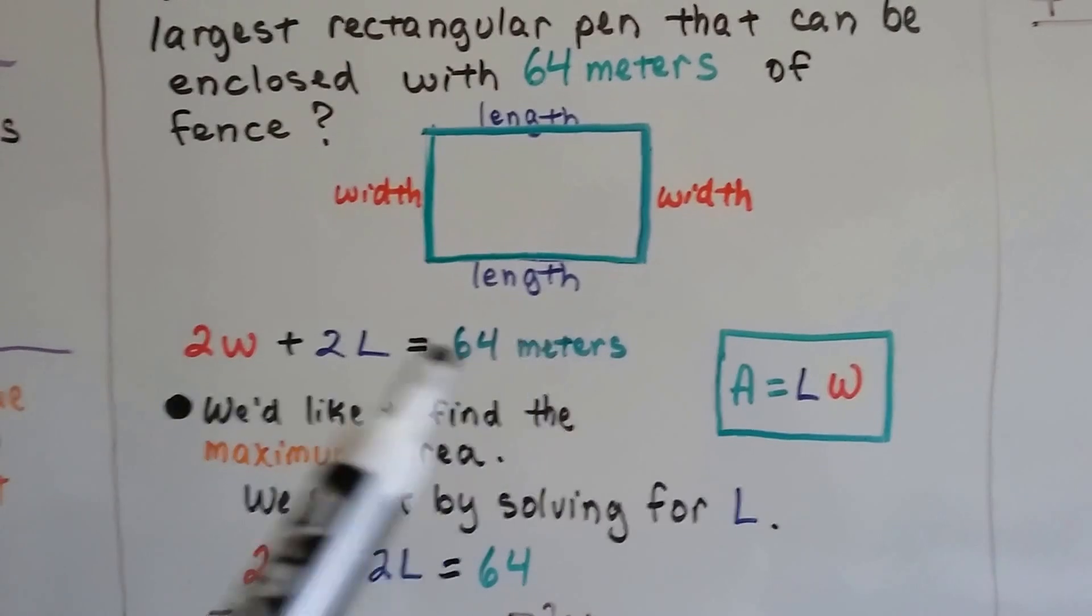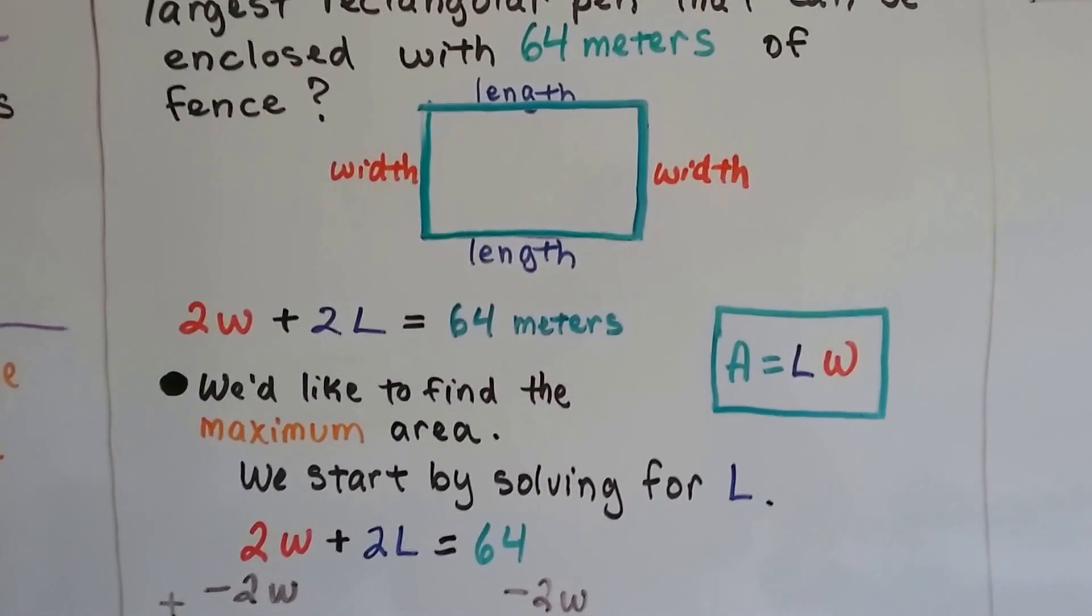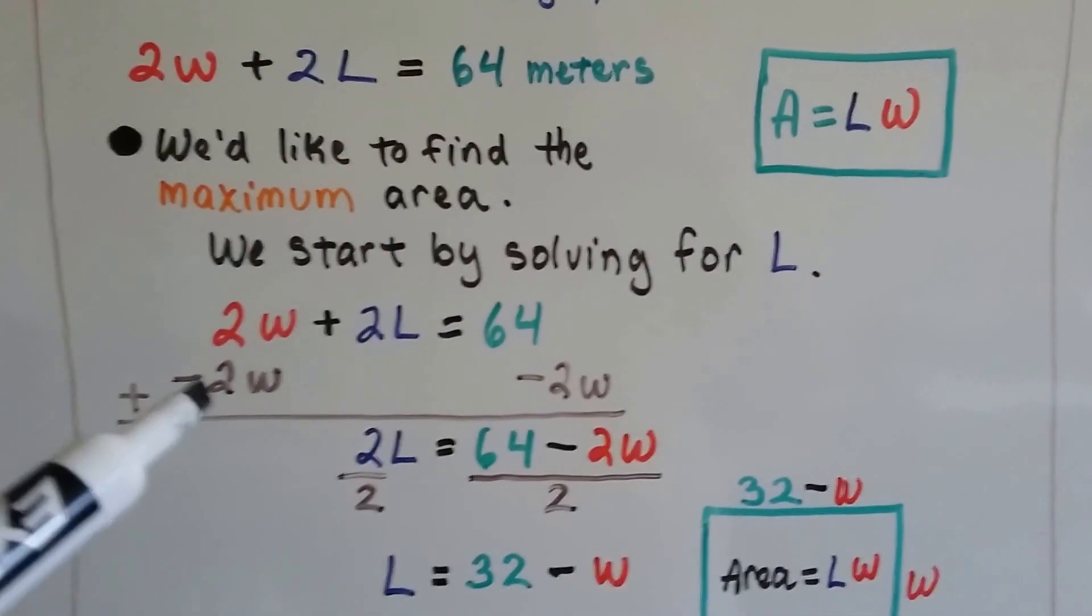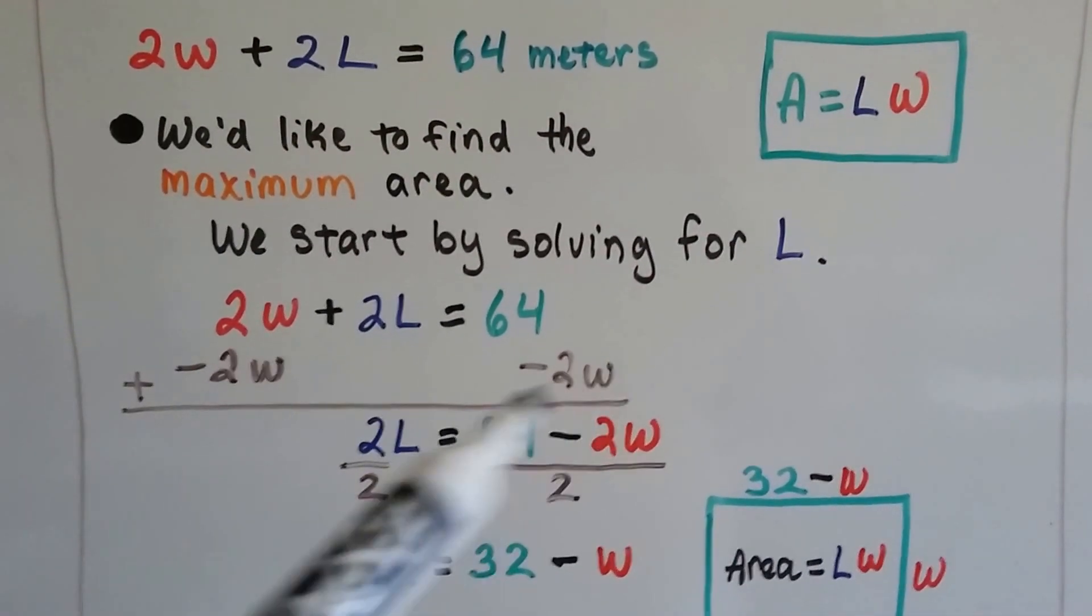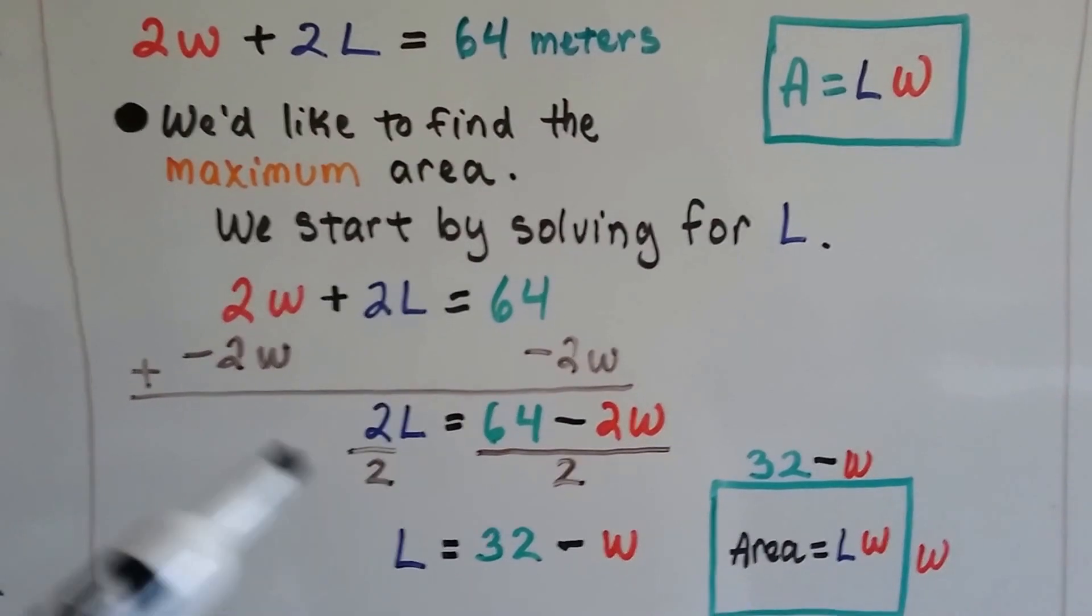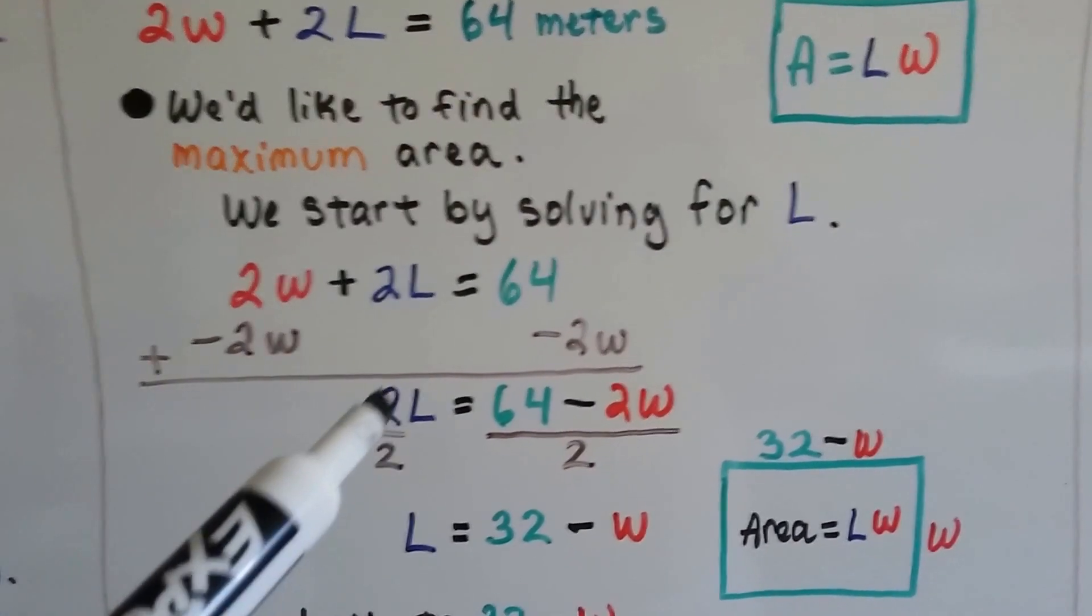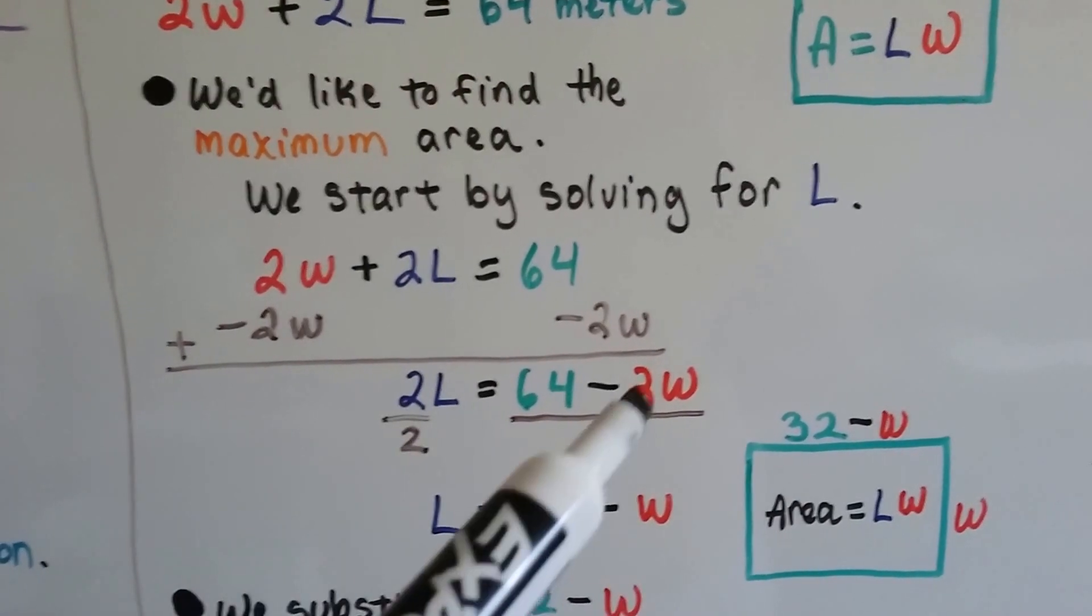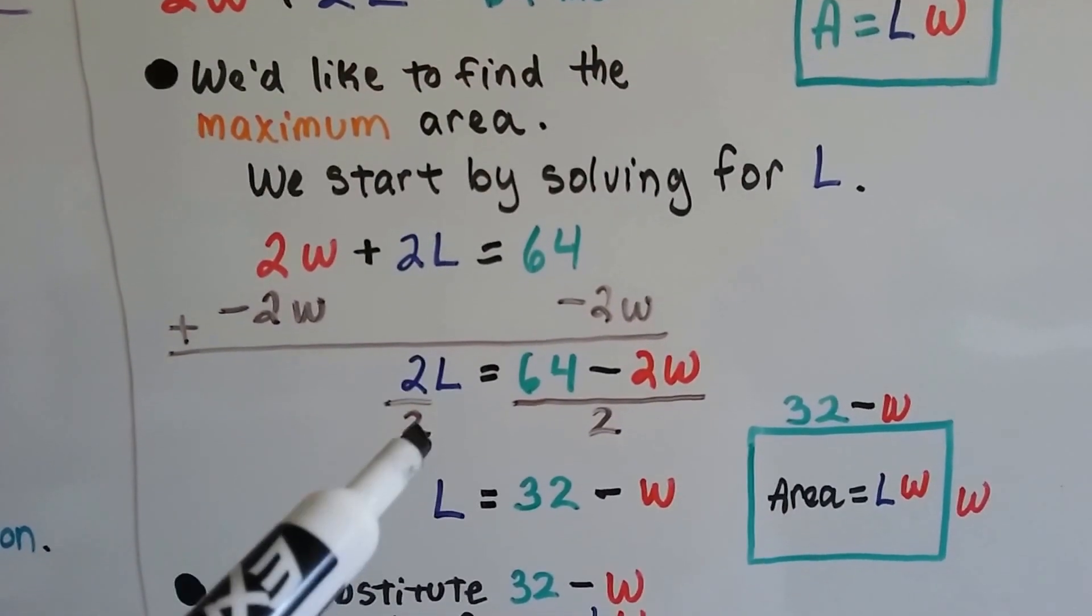We're going to take this equation and start by solving it for L. We can add -2W to each side of the equation to isolate L. That makes a zero pair. We get 2L = 64 - 2W.